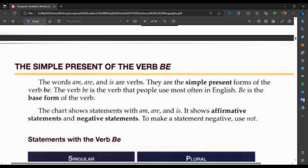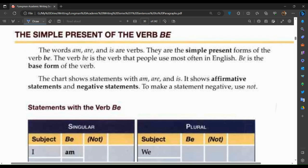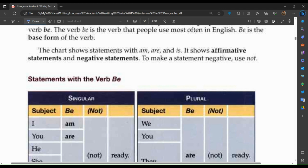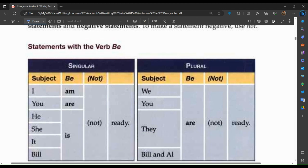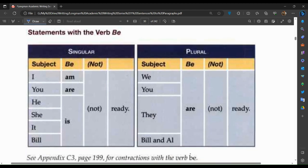The simple present of the verb be. The words am, are, and is are the verbs. They are simple present forms of verb be. The verb be is the verb that people use most often in English. Be is the base form of the verb. The chart shows statements with am, are, and is. It shows affirmative statements and negative statements. To make a statement negative, use not.